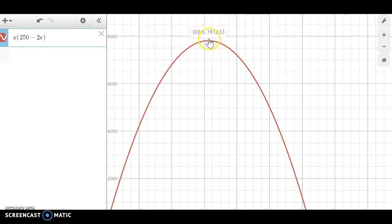And there we have it verified that 62.5 is the x value and the value of the area or the output is 7,812.5.